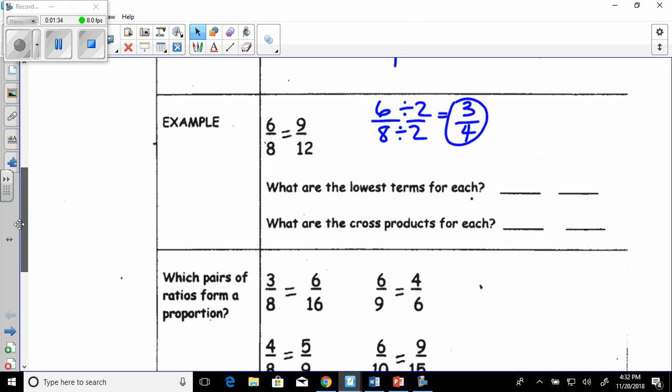We can also take 9/12 and reduce that to lowest terms. And if I divide by 3, I would also get 3/4. So what does that all mean? Well the lowest terms for each fraction or ratio is 3/4.